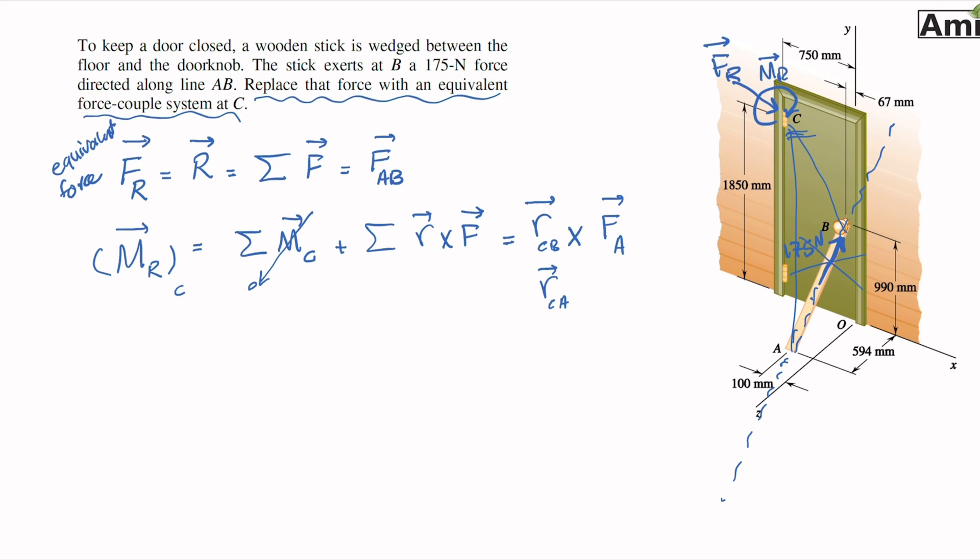So it looks like in order to find FR and MR, we need to find three things: FAB in vector form - we know it's 175, we know it goes from A to B, but we've got to find it in vector form. And we have to find a position vector, either CB or CA. Let's just start with the force, then we'll do position vector, and then we'll do the cross product.